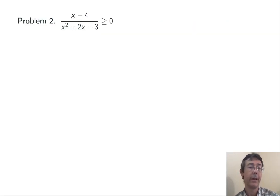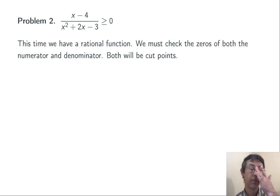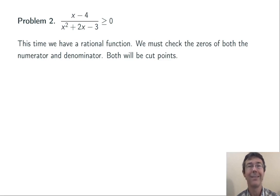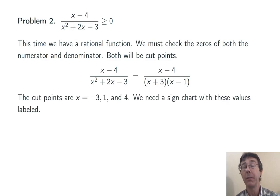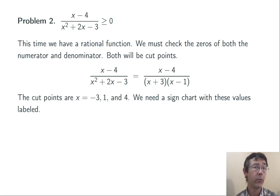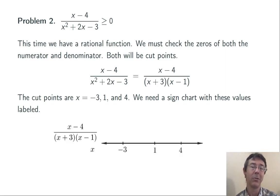Problem two: x minus four over x squared plus 2x minus three, greater than or equal to zero. This time I've got a rational function, so I need to check for the zeros of the function and the discontinuities — basically setting the numerator and denominator both equal to zero. To do that, I want to factor as much as possible. The denominator becomes (x+3)(x−1). Setting the numerator and denominator each equal to zero, I get three cut points: negative three and one from the denominator, and four from the numerator. I need a sign chart with those three values labeled.